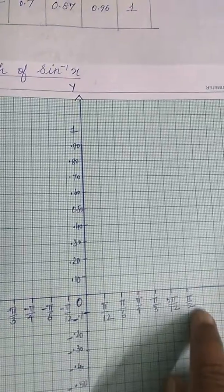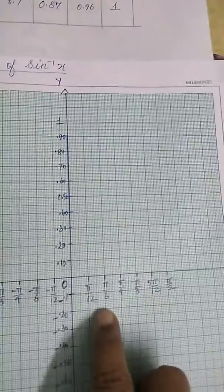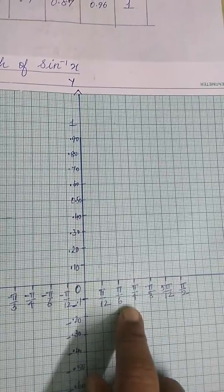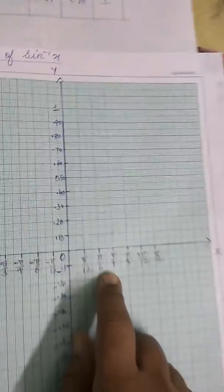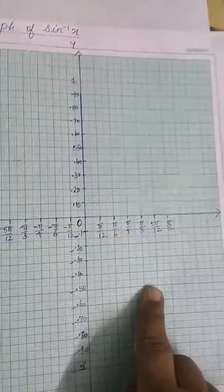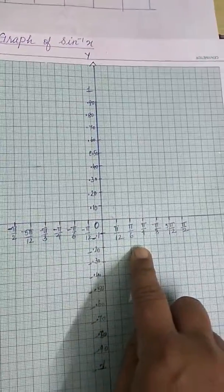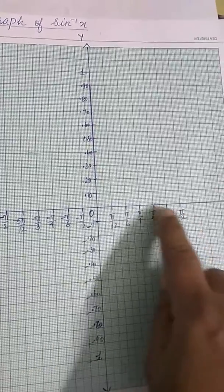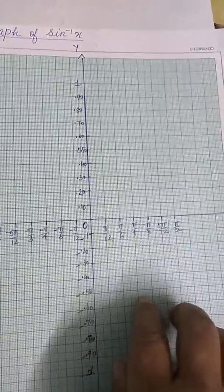When you note the values, only specific angles are needed. For the beta graph, I have taken decimal values also. From the sine value table, you can take the value or calculate it. When you do this in the record notebook, you can find the exact value. But in math activity or practical exams, you mention these angles but mark only the specific angle values so that you can get the same graph.